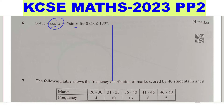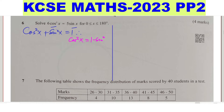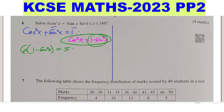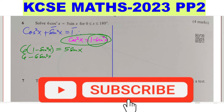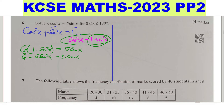To convert, use the identity: cosine squared x plus sine squared x equals 1. Making cosine squared x the subject gives cosine squared x equals 1 minus sine squared x. Substitute cosine squared x with 1 minus sine squared x, so 6 cosine squared x becomes 6 times (1 minus sine squared x), which equals 5 sine x. Opening the brackets gives 6 minus 6 sine squared x equals 5 sine x.